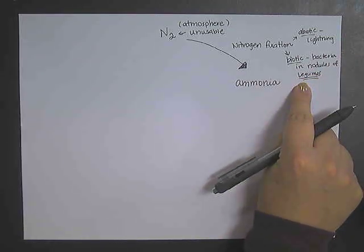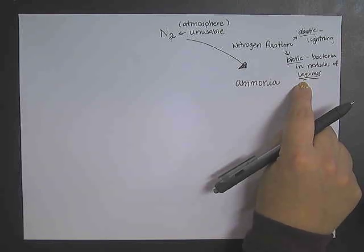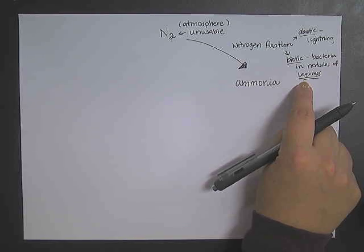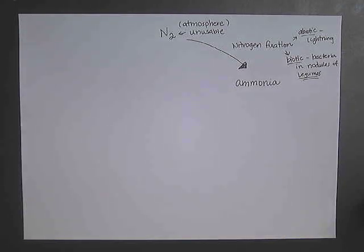The legumes include clover, peanuts is a very well-known example of legumes. They're not nuts. They're in the roots of plants, and they have that symbiotic relationship with the bacteria that can help remove that nitrogen from the atmosphere.